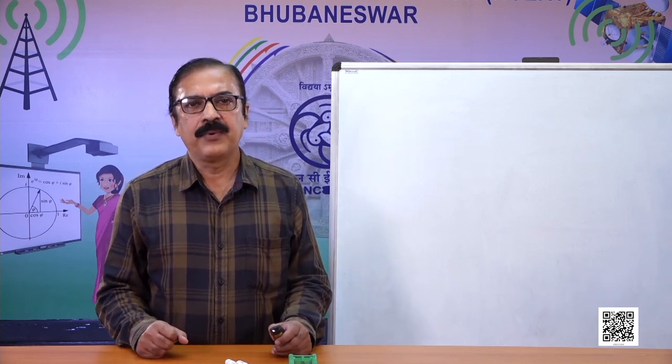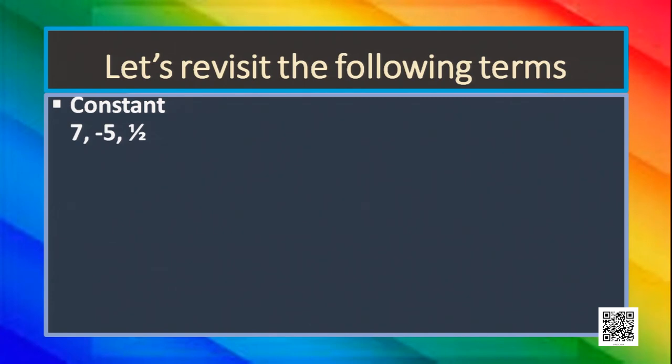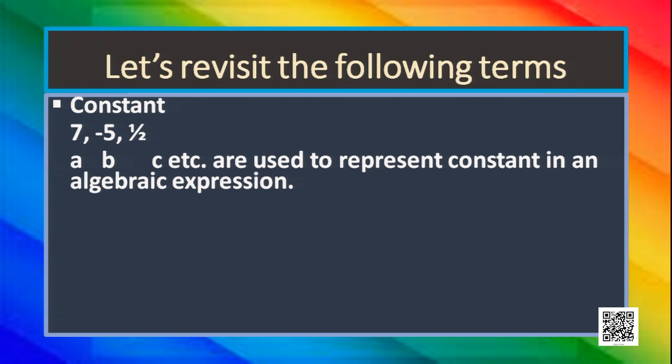Let's revisit the following terms. As we have studied earlier in polynomials, here also we deal with algebraic expressions. So let's start with constant. What is constant? The constant means the value will not change, such as 7, minus 5, 1 by 2. That means all numbers we use are usually constants. However, in algebraic expressions, we also use A, B, C — these are also used to represent a constant.